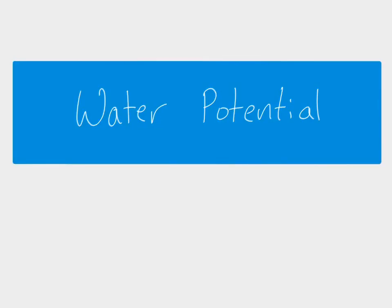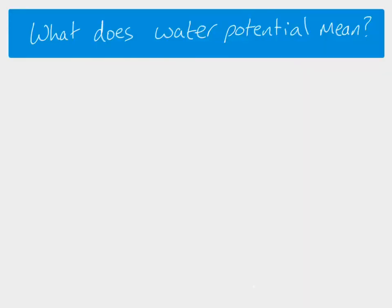Hi everybody. In this video we're going to be looking in a bit of detail about the idea of water potential. First of all we need to make sure we understand what water potential means. This is the sign for water potential — this letter is a Greek letter and we pronounce it psi. Water potential is a way of showing how likely it is, the tendency of water to leave one place and move to another place.